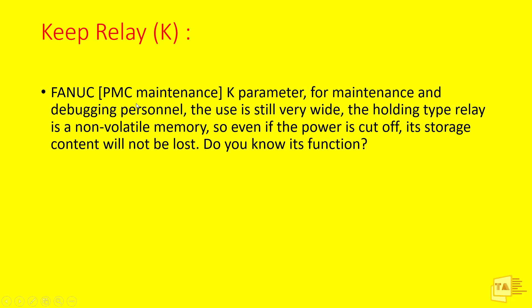The Keep Relay in FANUC is called the K Parameter. Some people call it K Parameter, some call it Keep Relay or bypass relay. For this video I'm using the term K Parameter. This K Parameter is used widely for maintenance and debugging purposes. The Keep Relay is a holding-type relay — it is a non-volatile memory. So even if the power is cut off, its stored content will not be lost. If you enable some Keep Relays while running the machine and the machine shuts down, when you turn it back on the Keep Relay data will retain its previous values.